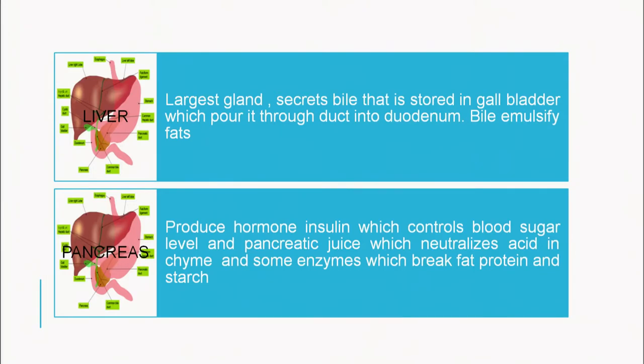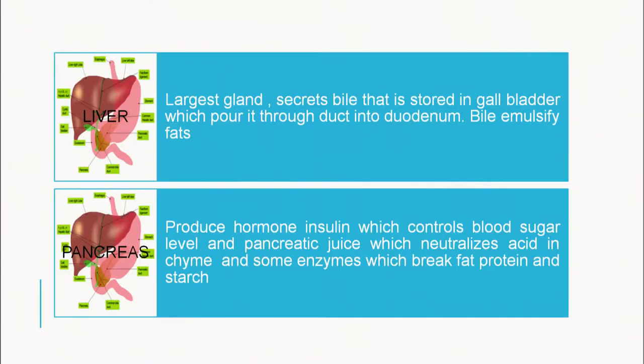The gallbladder pours its bile secretion through a duct into the duodenum. The pancreas, present near the stomach, produces the hormone insulin which controls blood sugar level. Pancreatic juice, also secreted by the pancreas, neutralizes acid in chyme. Enzymes that break down fat, protein and starches are also produced in the pancreas and delivered to the duodenum through the hepatopancreatic duct — a common duct for both the liver and pancreas.